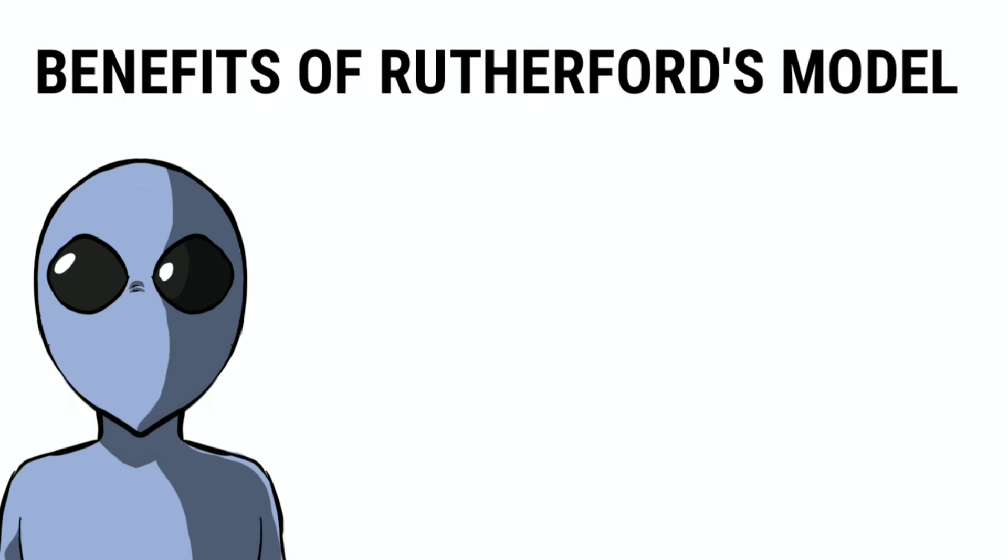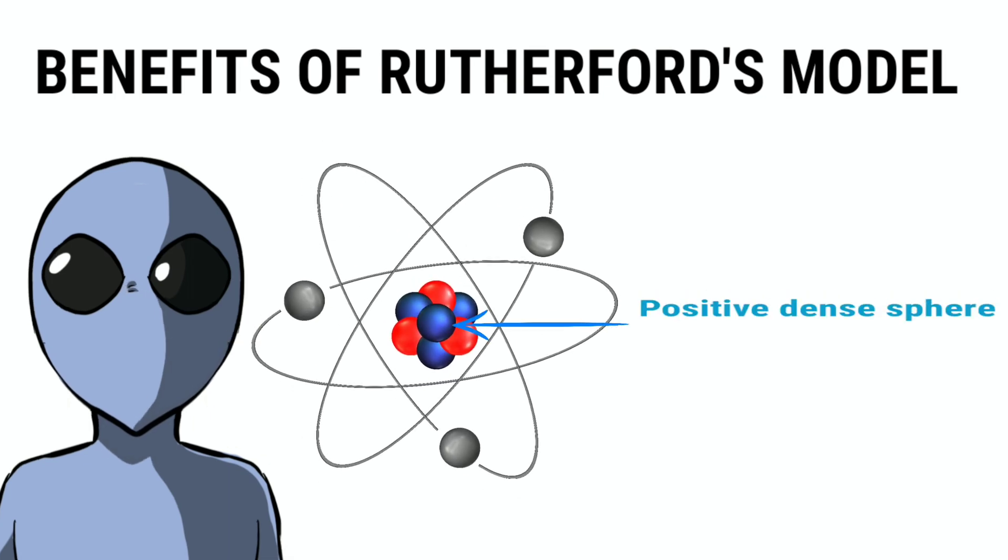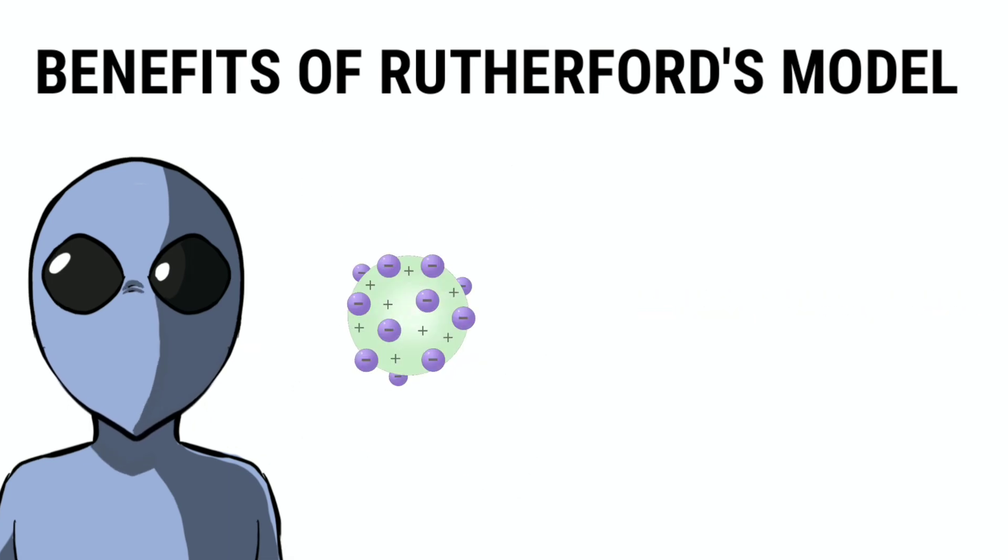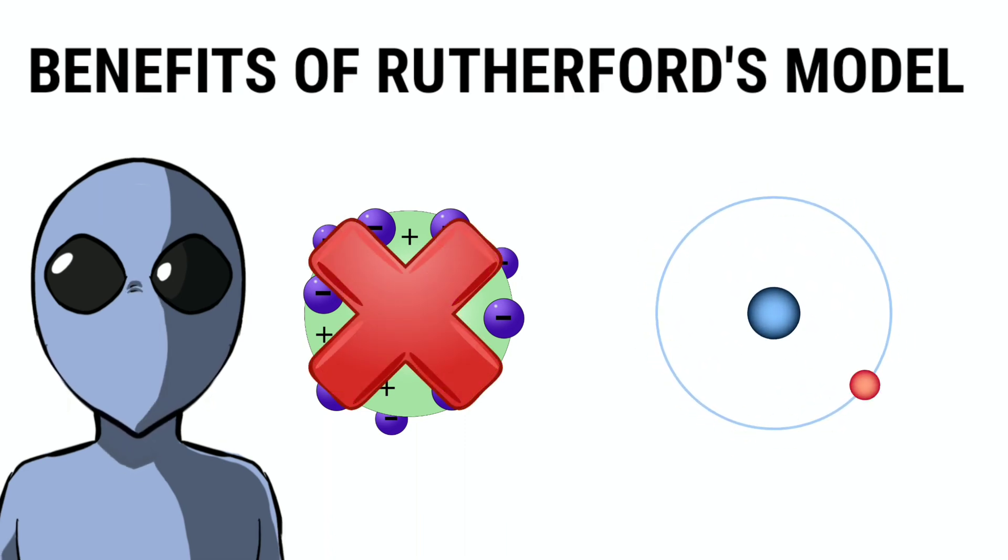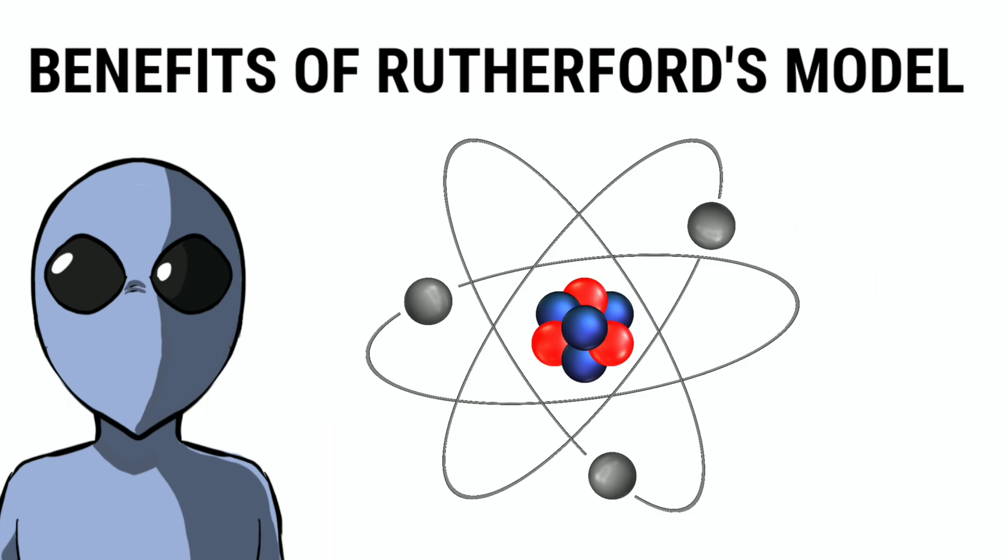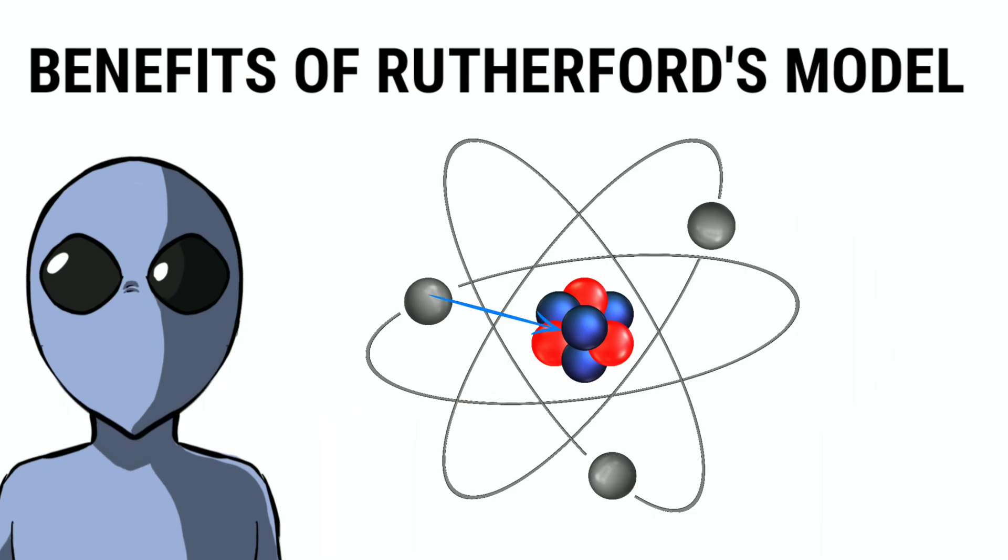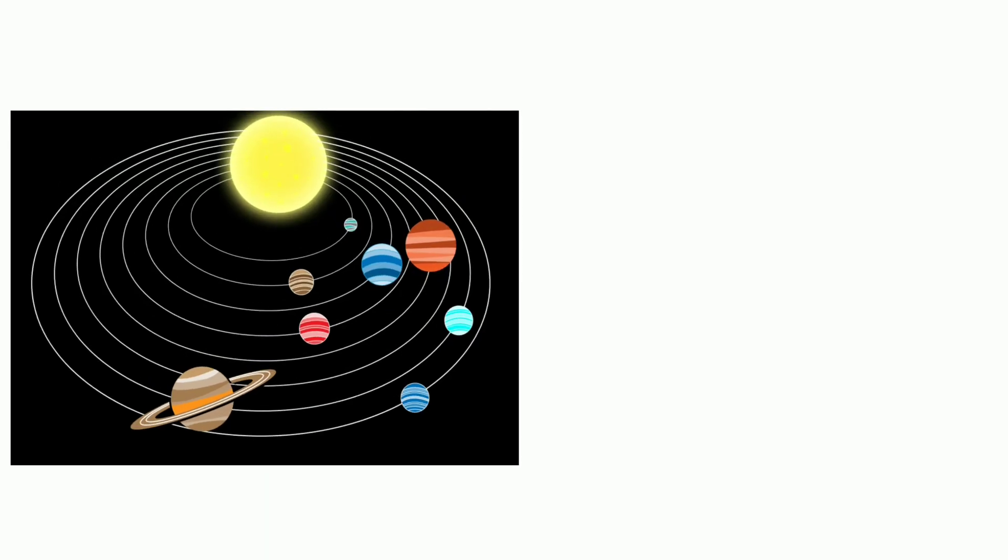Benefits of Rutherford's model over J.J. Thompson's model: He proposed a central dense positive sphere theory. He also explained that electrons aren't embedded in the nucleus, but rather revolve around it in complete orbits like planets do. He also explained that electrons revolve around nucleus due to electrostatic forces of attraction. Thus, he proposed a planetary model of an atom.